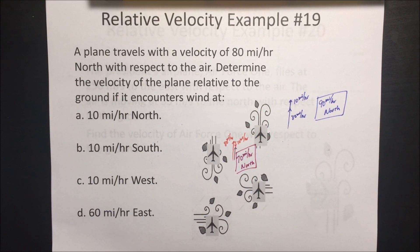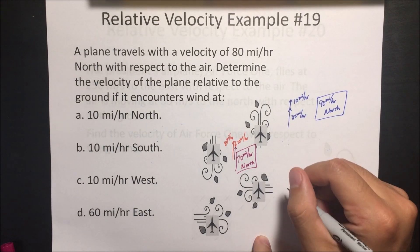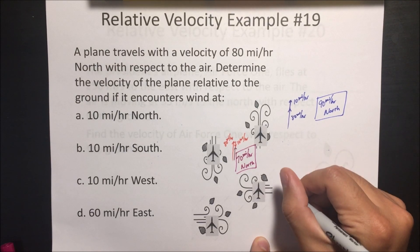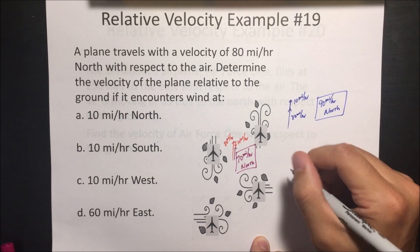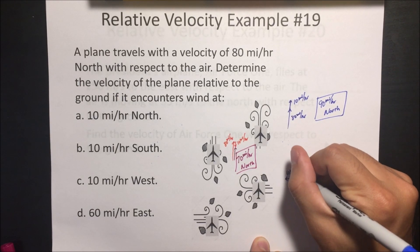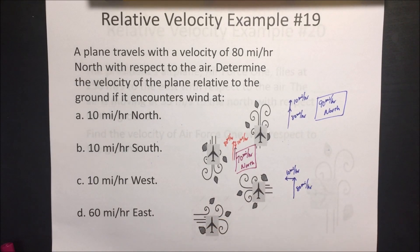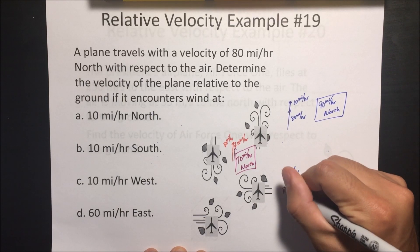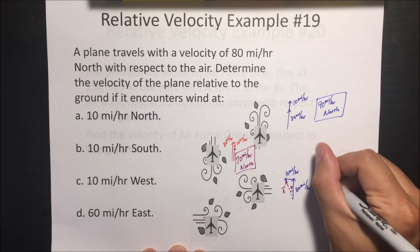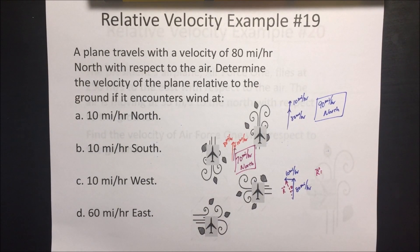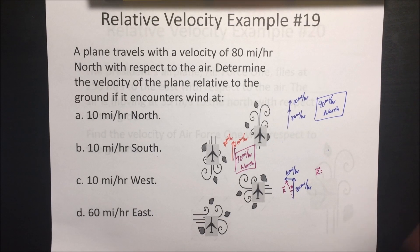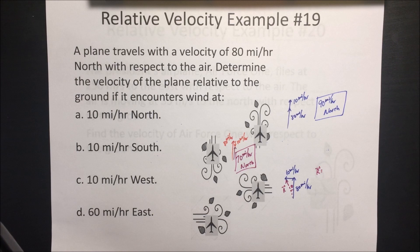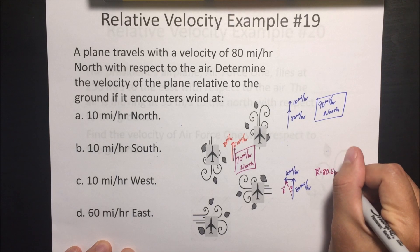This is where it gets a little more complicated — the wind is 10 miles an hour west. We're going to use our knowledge of vectors. The plane is going 80 miles an hour north, but the wind is pushing it to the left at 10 miles an hour. To find how fast it's going relative to the ground, we need to find the resultant vector using the Pythagorean theorem.